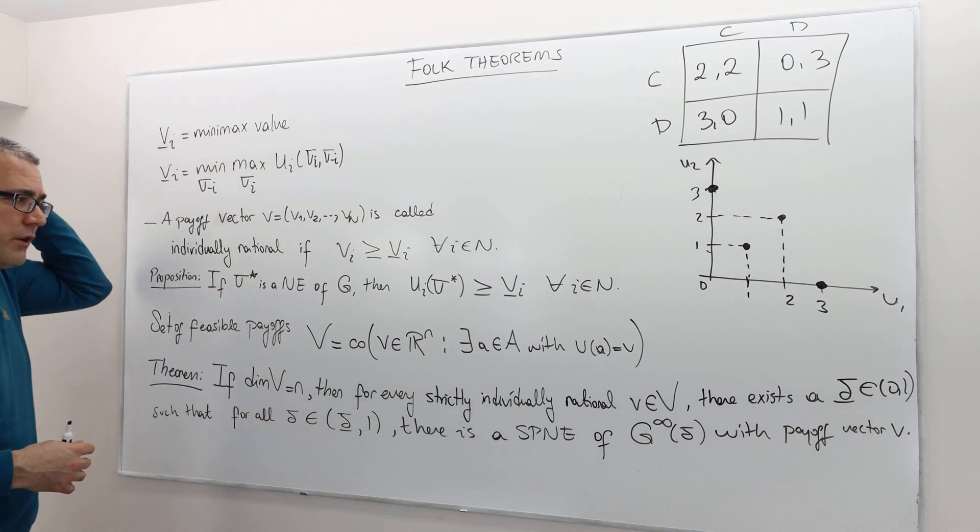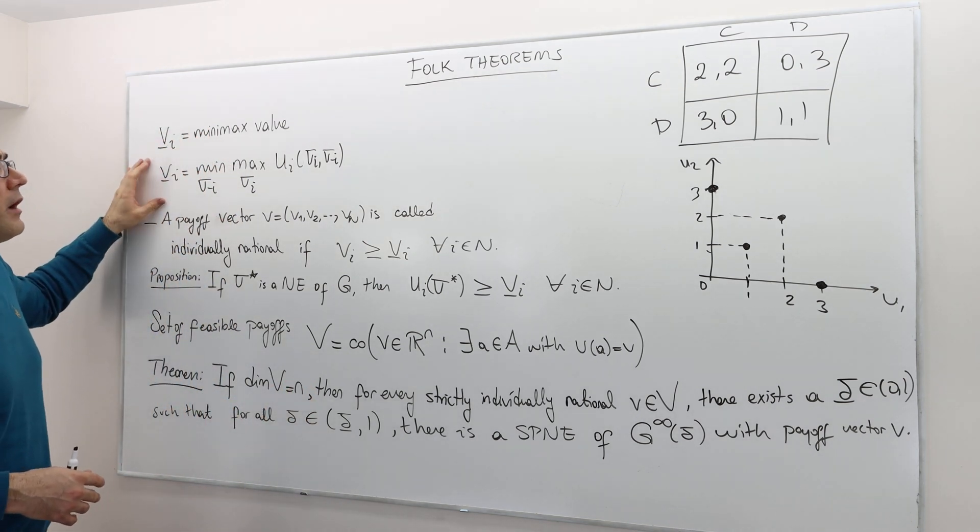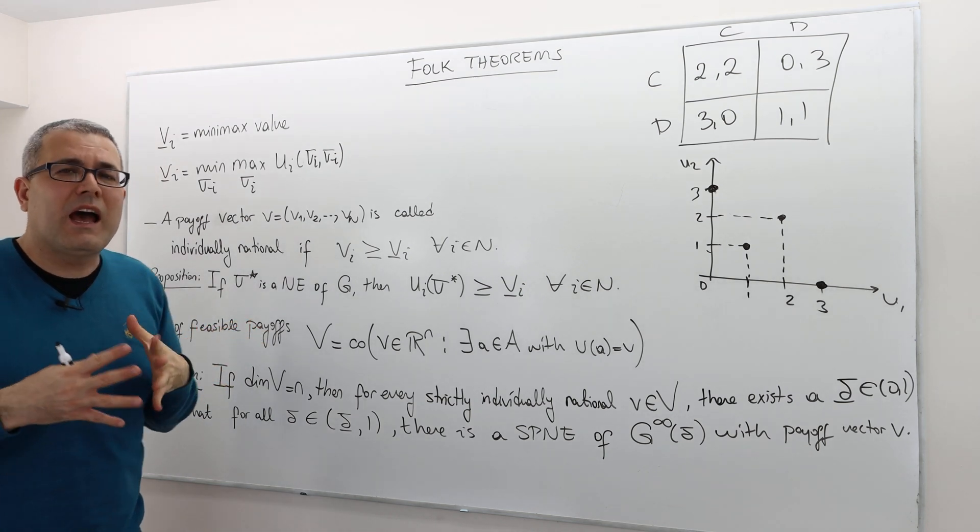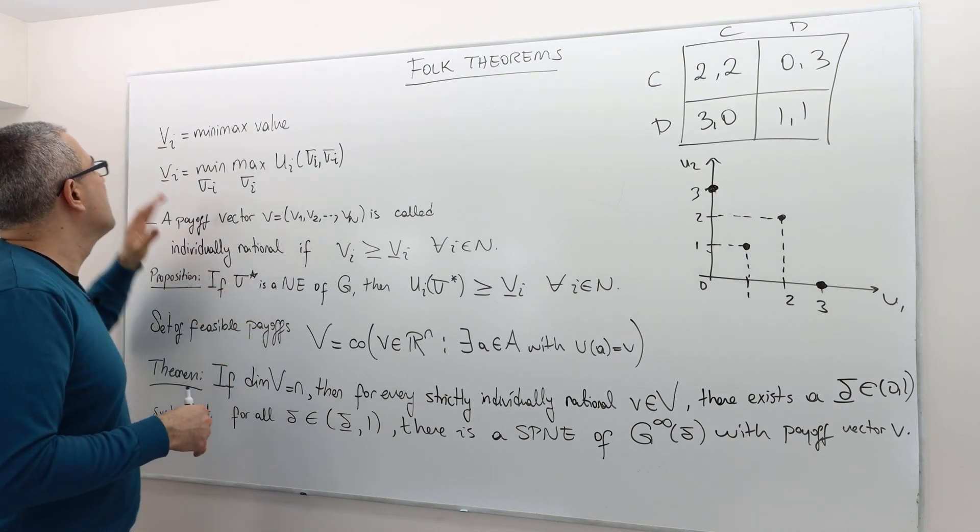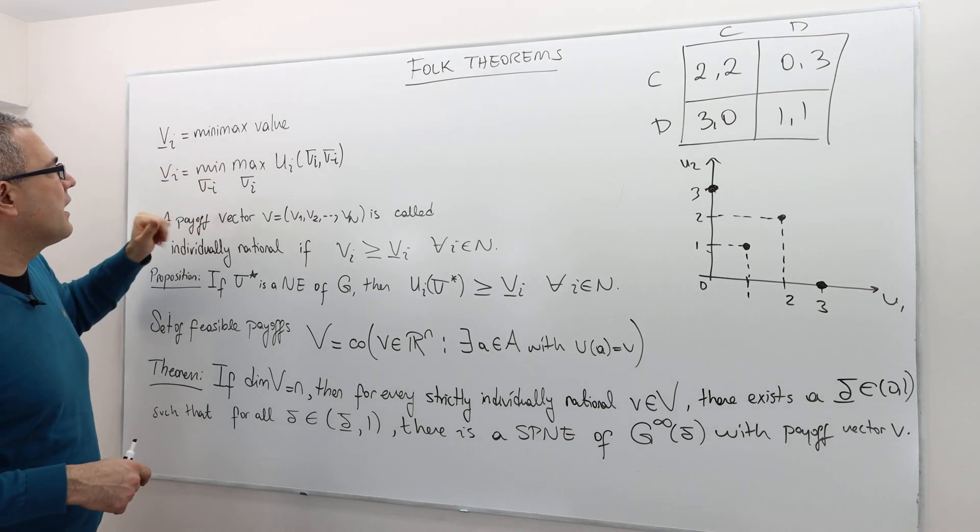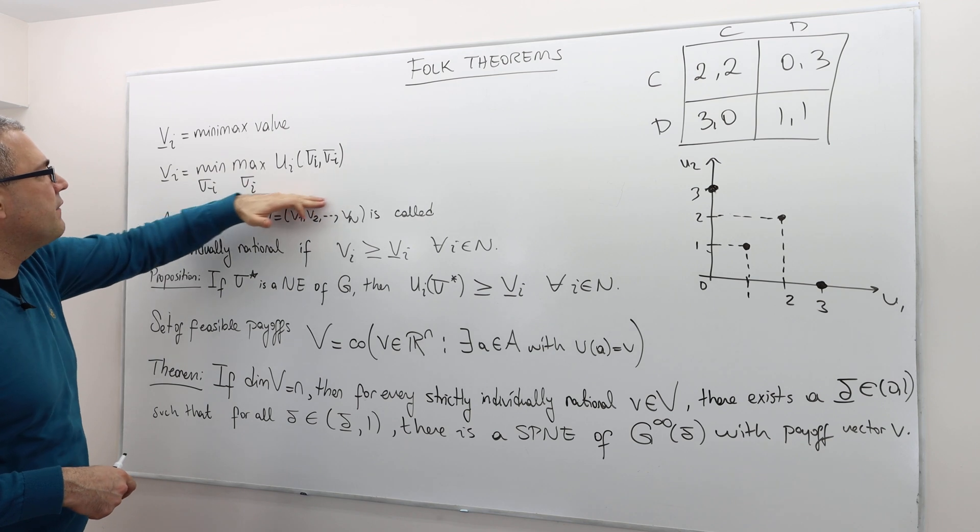So we need a little bit of notation to be able to talk about Folk Theorem. The first one is the min-max value. We already defined how to find min-max value, right? So vi-underbar, we call it min-max value. And as we know, it's found by this.